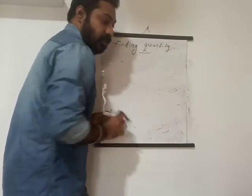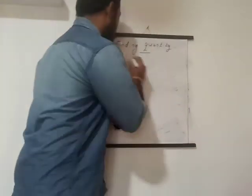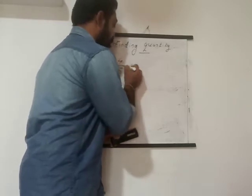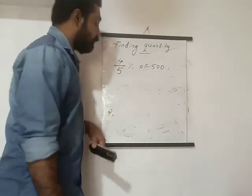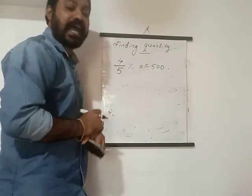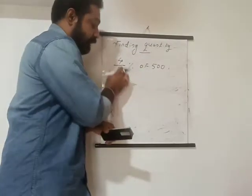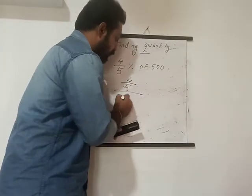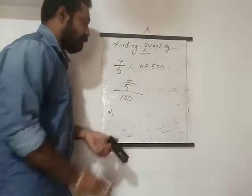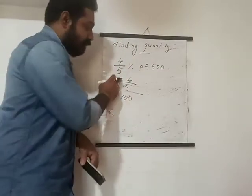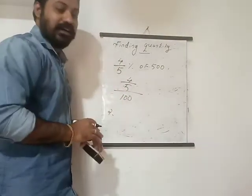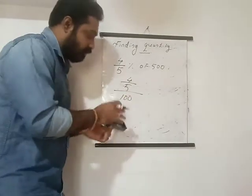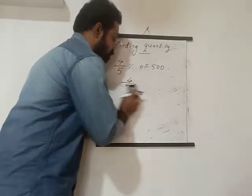Let me ask you a new example: find 4/5 percentage of 500. Here 4/5 is a fraction percentage. Whatever the percentage, you write it divided by 100. So for 30% you write 30 by 100, but here it becomes 4/5 divided by 100. This is a new thing for you. Before I do this question, I will explain one concept — that is called reciprocal multiplication.